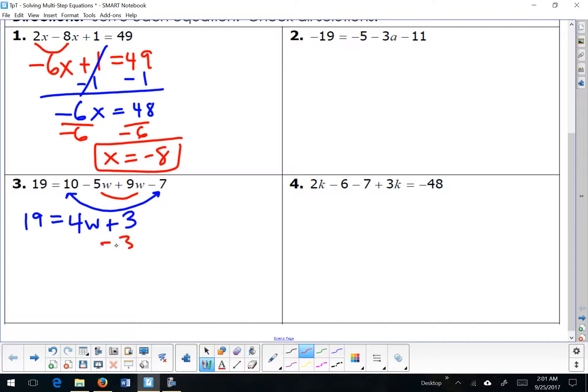And now I'm ready to use my inverse operations. 4W is equal to 16. Divide by 4, divide by 4, and get my solution. If you think that you were able to follow along with my steps, you should try questions 2 and 4 on your own. Pause the video, finish your work, and when you're ready to check your answers, turn the video back on.